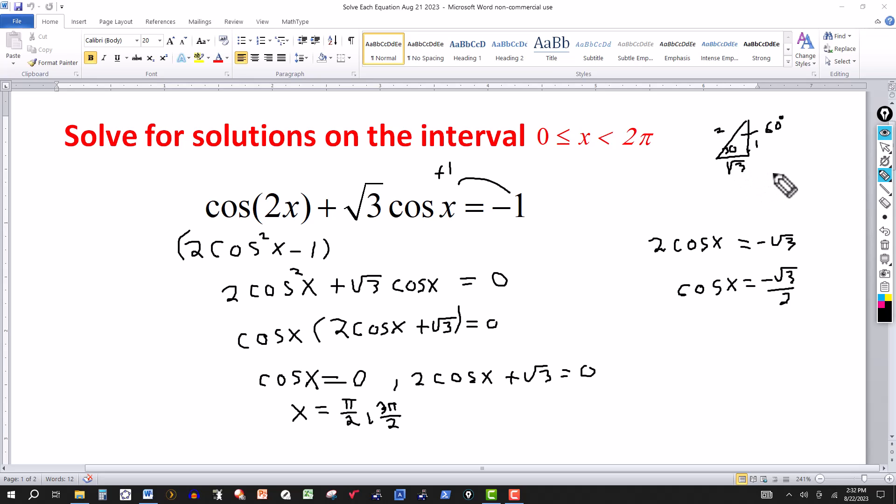So the cosine of 30 degrees is radical three over two. So that tells me that 30 degrees or pi over six can be used as a reference angle. So see here, cosine of x is equal to negative. So 30 degrees is not going to work because 30 degrees is in the first quadrant, and in the first quadrant, the trig function value of any angle of any function is going to be positive. We want a negative.